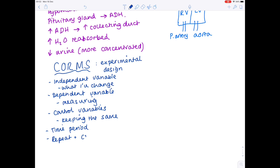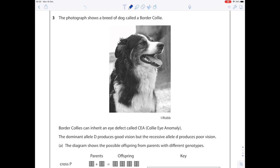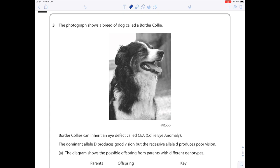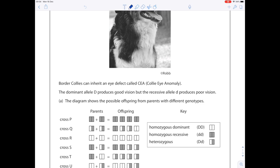I want to talk through this particular question because it is a difficult question. It's all to do with genetic crosses and Punnett squares. I want to show you how I would approach it so you don't panic. Just because this question looks slightly different, I can still do a really good job. The key to doing well is making sure you read every word and don't rush. The photograph shows a breed of dog called a Border Collie. Border Collies can inherit an eye defect called CEA, Collie Eye Anomaly. The dominant allele D produces good vision, but the recessive allele d produces poor vision. The diagram shows the possible offspring from parents with different genotypes.